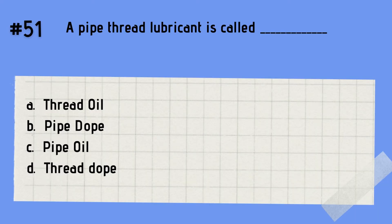Question 51: What do you call a pipe thread lubricant? A. Thread oil. B. Pipe dope. C. Pipe oil. D. Thread dope. The answer is B — pipe dope. Remember that pipe dope is a pipe thread lubricant, thread sealing compound, or anaerobic chemical sealant that is used to make pipe thread joints leak-proof and pressure-tight.